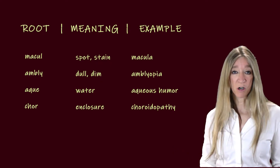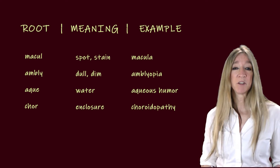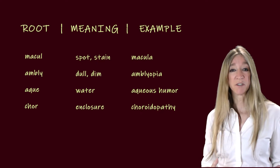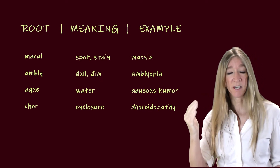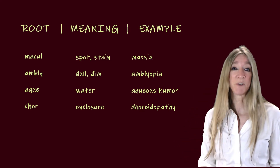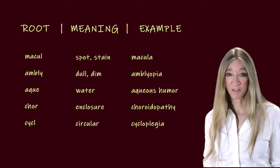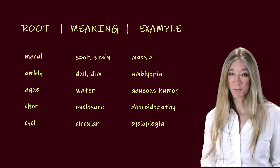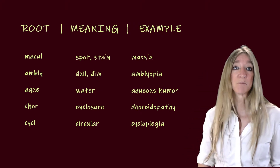The next root, chori, meaning enclosure. An example: choroidopathy — this is a disease or an abnormal condition of the layer in between the retina and the sclera, the sclera being a hard part of the eye. That root will also appear when we study the integumentary system. The next root, cycle, meaning circular. An example is cycloplegia — plegia, which we've seen before, means paralysis — and it is paralysis of the intraocular muscle.